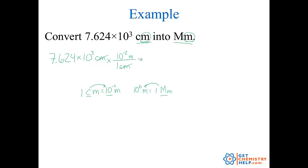So meters has to cancel, so it has to go on the bottom down here. So ten to the sixth meters on the bottom, one megameter on the top. Meters cancels. We push that on our calculator, and we get 7.624 times ten to the negative fifth megameters.